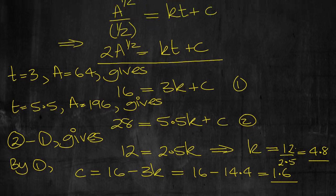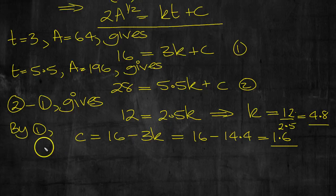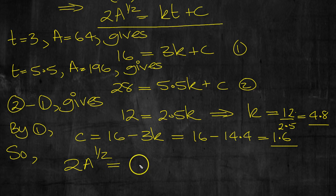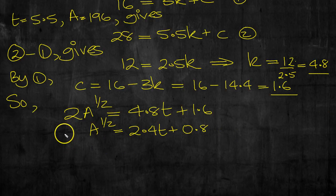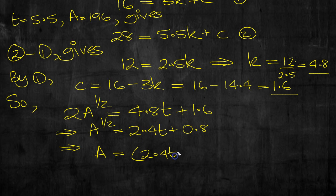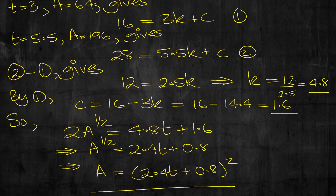So we've got our equation then. 2A to the half then is equal to Kt, rather, 4.8t plus C, which is 1.6. So A to the half then is equal to 2.4t plus 0.8. Square both sides to get A. So A will equal then, it will be 2.4t plus 0.8 all squared. And there's the value for A in terms of t.